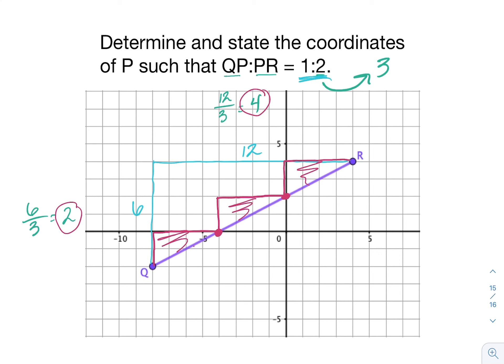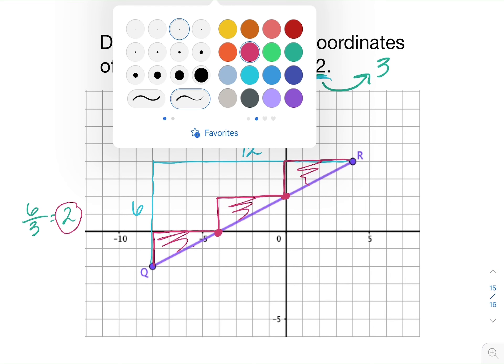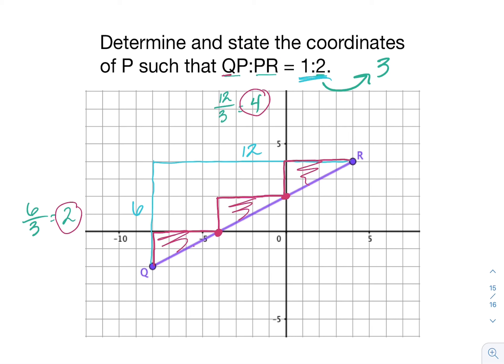I want to split it into a ratio of one to two starting from point Q. From point Q there's one of those three equal pieces, and then from here to R would be two equal pieces.